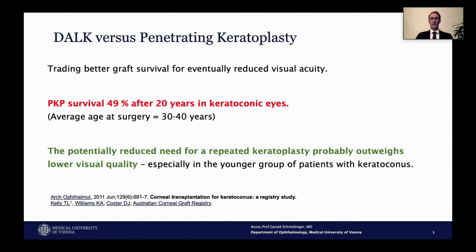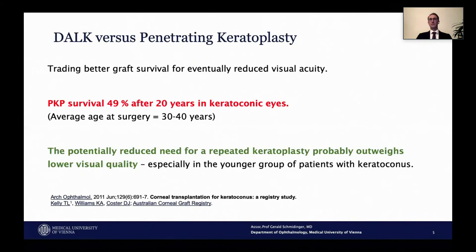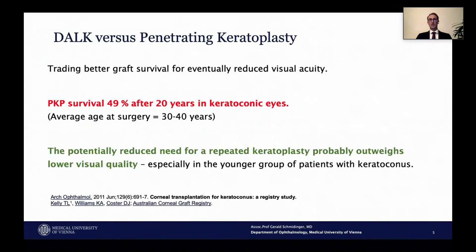So when we look at keratoconic patients getting keratoplasty, we're probably trading a little visual acuity for better graft survival. Keratoconic patients are between 30 and 40 years old on average, and the average graft survival is about 20 years. The potentially reduced need for repeat keratoplasty most likely outweighs the lower visual acuity, especially in these young patients. However, there is a drawback to manual DALK: a long learning curve, risk of unintentional penetration during the side cut with a guided trephine, and risk of penetration with the big bubble needle when there is no guiding tunnel, plus an unknown residual stromal back thickness.